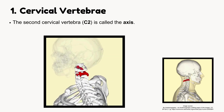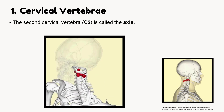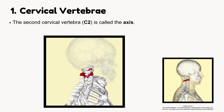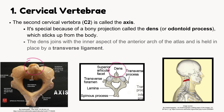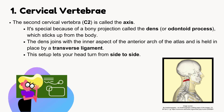The second cervical vertebra, C2, is called the axis. It's special because of a bony projection called the dens, or odontoid process, which sticks up from the body. The dens joins with the inner aspect of the anterior arch of the atlas and is held in place by a transverse ligament. This setup lets your head turn from side to side.